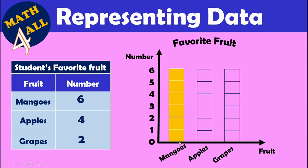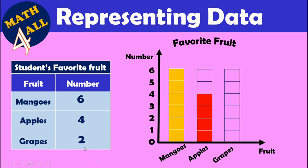60 students chose mangoes as their favorite fruit. Next, we have apples — 4 students chose apples, so you will color this part to reach number 4. You will stop on 4 and color it.